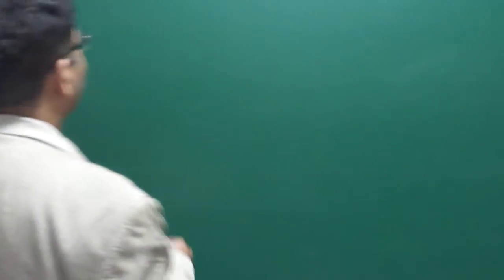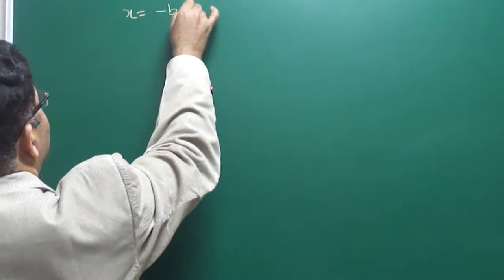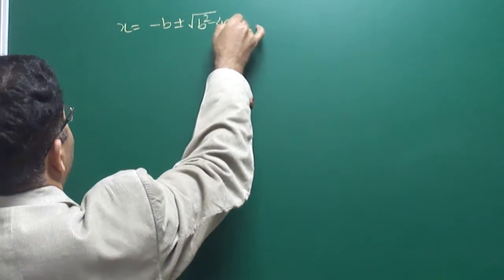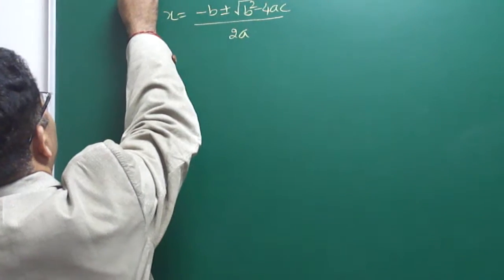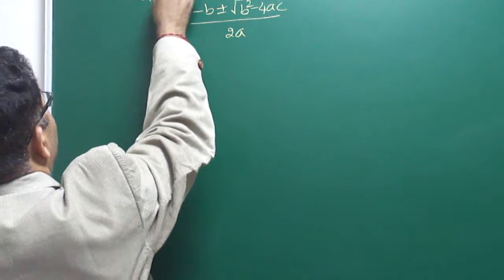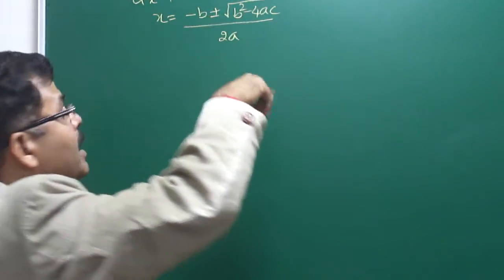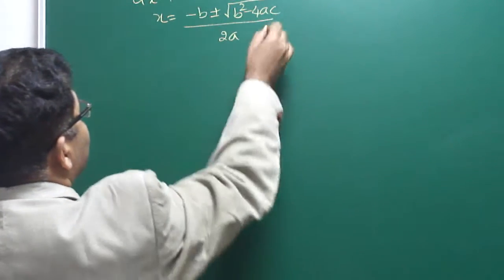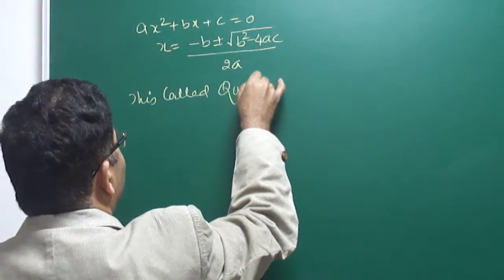We discussed the quadratic equation — how the formula can be derived. In the last class we established that x equals minus b plus or minus root of b squared minus 4ac, upon 2a. If the equation is ax squared plus bx plus c equals zero, then x equals this. This is called the quadratic formula.